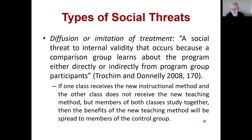Diffusion or imitation of treatment occurs when the comparison group learns about the program, directly or indirectly, from program group participants. If one class receives a new instructional method and the other doesn't, but members of both classes study together, the benefits of the new teaching method spread to the control group. You could eliminate this by having them study separately, but in a school setting with classes in the same building, there's very little you can do to keep students from studying together.